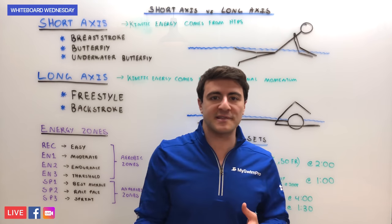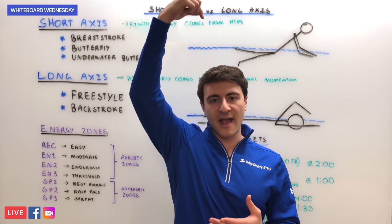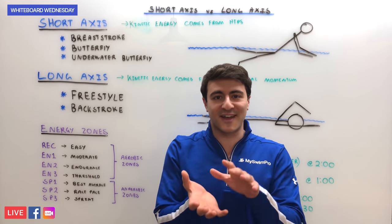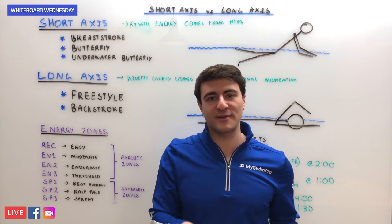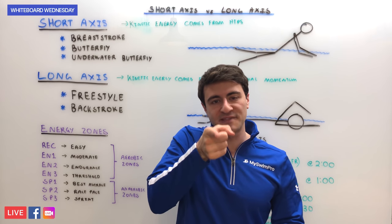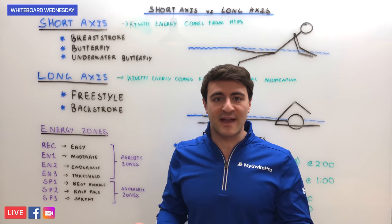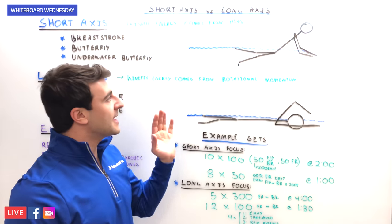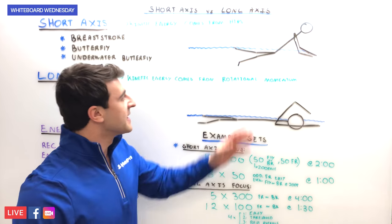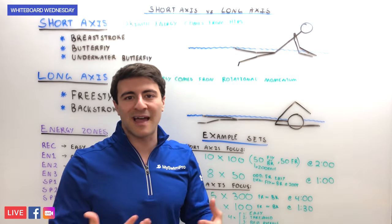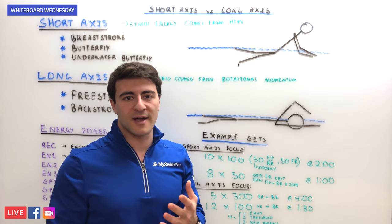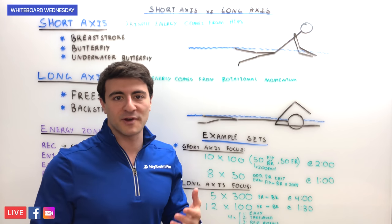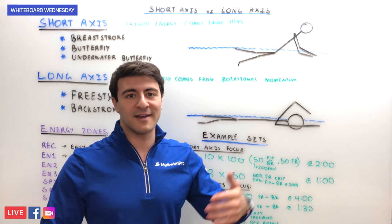If someone is swimming freestyle or backstroke, you could take a laser going right through their head, body, and toes and rotisserie-chicken rotate their body 360 degrees around that same center line. That's obviously not how it works in breaststroke and butterfly, where the hips are driving the kinetic energy, resulting in an up-and-down motion — which is why breaststroke and butterfly are considered the most inefficient and slowest strokes in terms of how much you'll fade in a race.